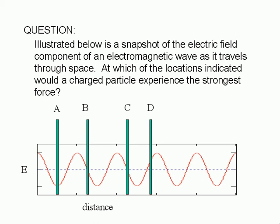The graph shown here tells us the relative strength of the force that a charged particle will experience at the different locations. A charged particle will experience the greatest force at the troughs, as in point A, and at the crests. The correct answer is therefore A.